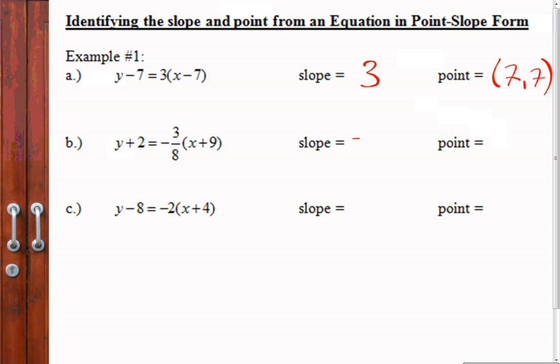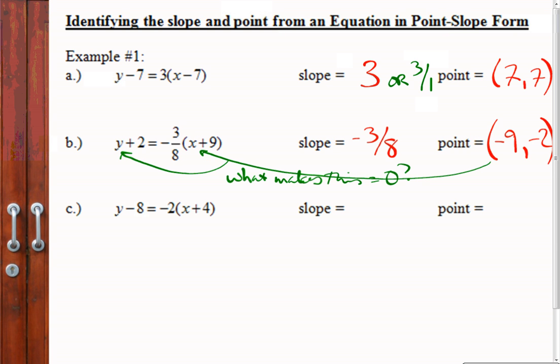For example, slope is the multiplier, that's 3, and in this case my point would be (7,7). Your slope here is negative 3/8, your point here, remember you have to change the sign, so that's going to be (-9, -2). The last one, slope negative 2. Remember, you could always write these as an improper fraction which is a good thing to do so you don't mess up where things are going.